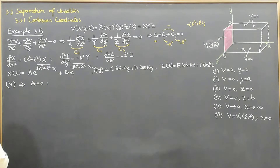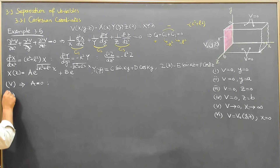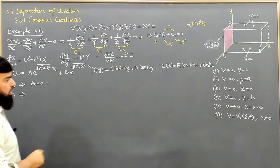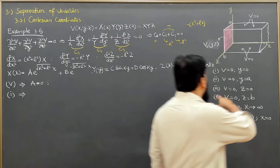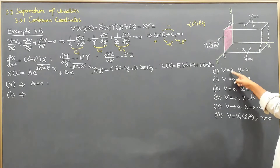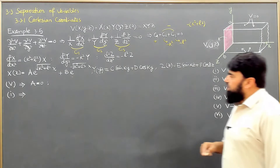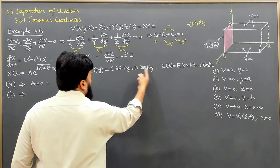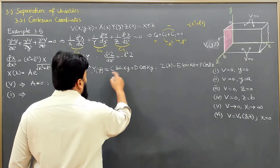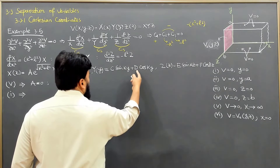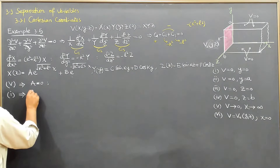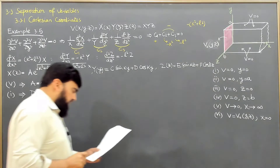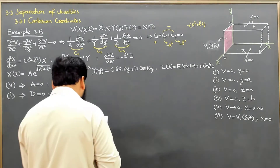Now for boundary condition 1: v is 0 at y equals 0. When y equals 0, the sine term becomes 0 but the cosine term gives d·cos(0) = d, which remains and does not go to zero. So in order to satisfy the solution according to the boundary conditions, we must put d equal to 0.